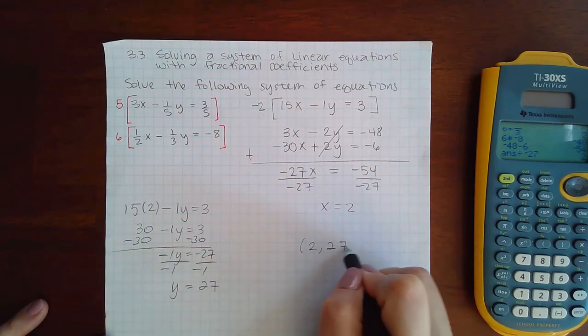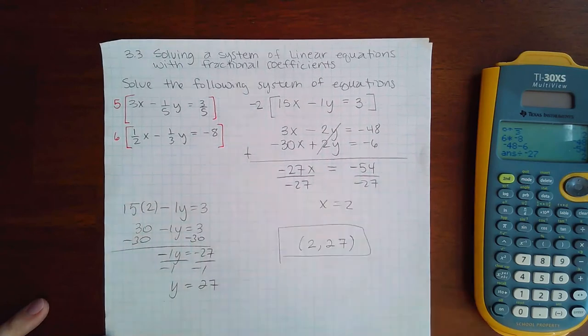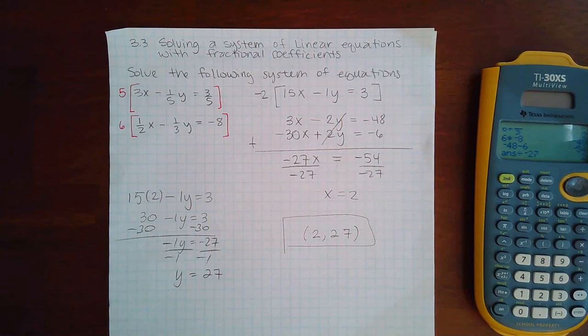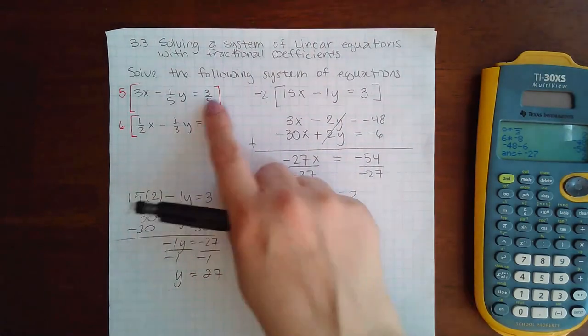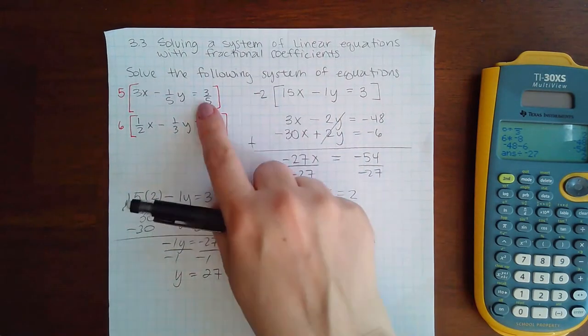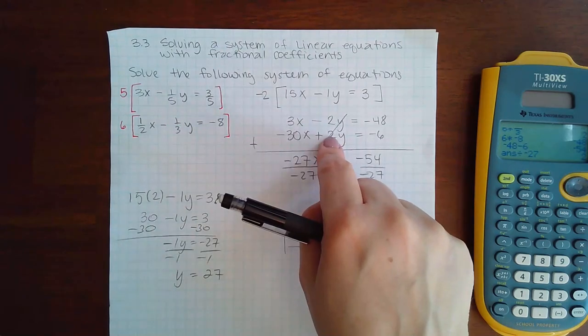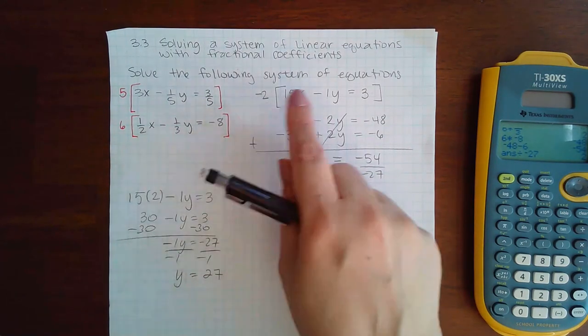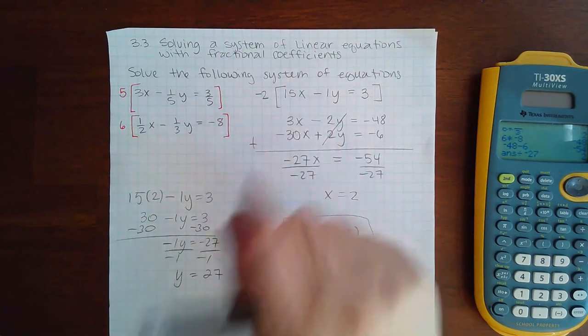So what is the coordinates? 2 for x, 27 for y. Now you will only get the correct answer if you did this step correctly. If you did not do this step correctly, then this is all wrong. You have to make sure that you do your new equations perfect.